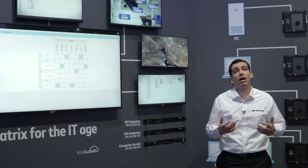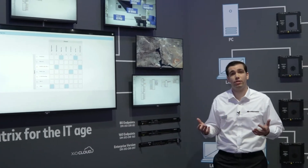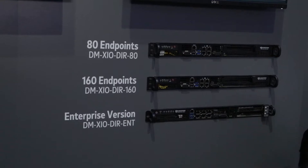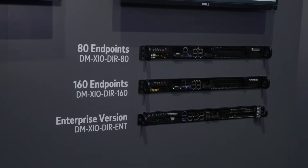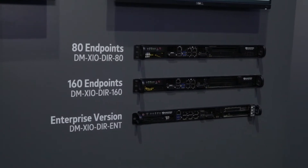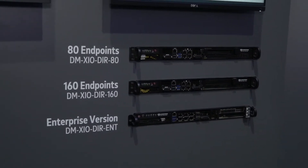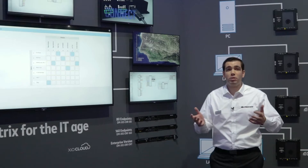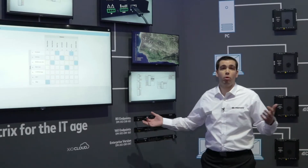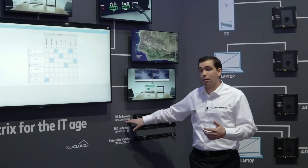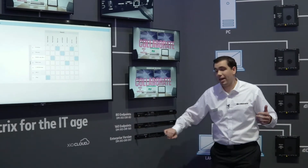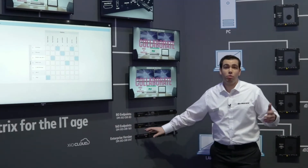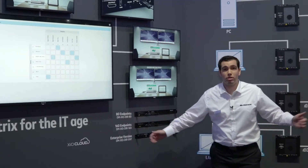There are three different models of XIO Director: the DM XIO DIR 80, 160, and ENT. The numbers mean exactly what they support — 80 endpoints, 160 endpoints, and ENT which is a thousand endpoints.